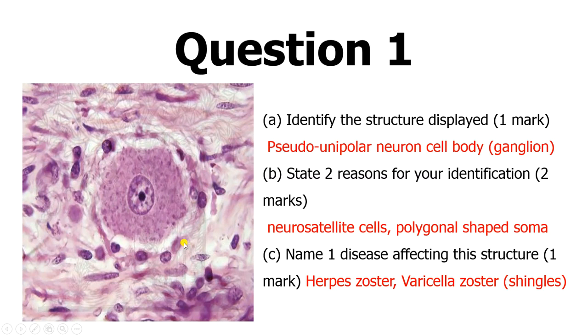And then what you can see here are what we call the neural satellite cells. So you have a polygonal-shaped soma. When you talk about the soma, you talk about the cell body of the neuron, and this is where integration of neuronal information occurs. And then you have the supporting cells here, the neural satellite cells.